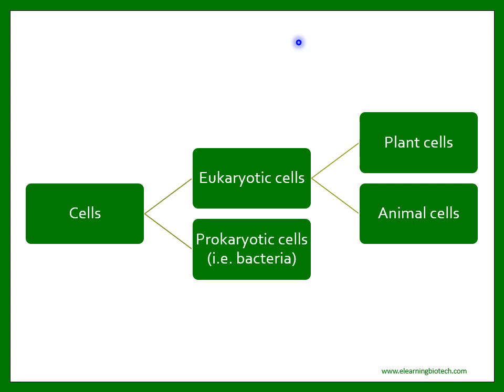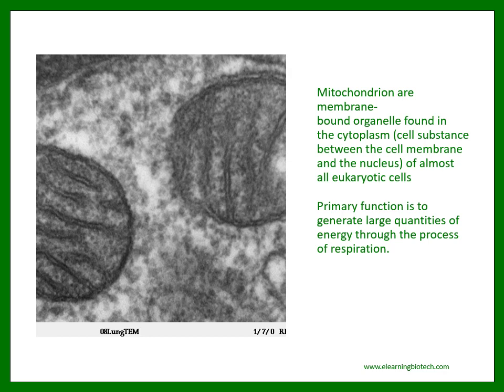Just like we breathe, a cell breathes by a process called respiration. It is carried out in specialized compartments called mitochondria. Mitochondria are membrane-bound organelles found in the cytoplasm — the cell substance between the cell membrane and the nucleus — of almost all eukaryotic cells. Their primary function is to generate large quantities of energy through the process of respiration. On the left, you can see a picture of two mitochondria from a thin section cut through an area of lung tissue.